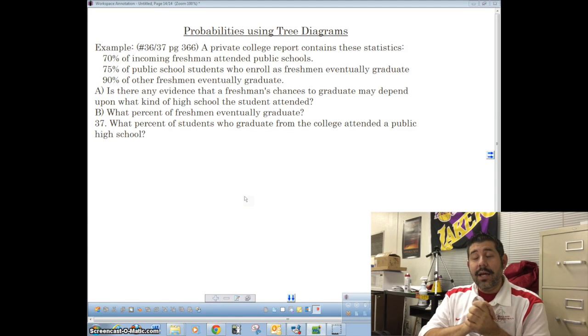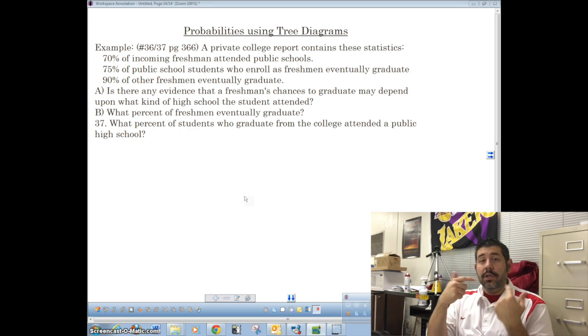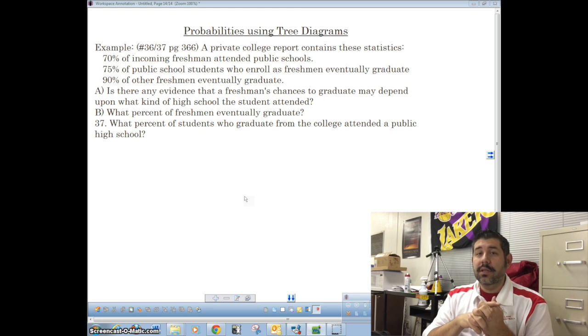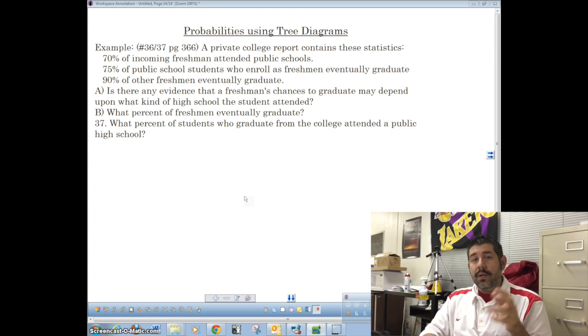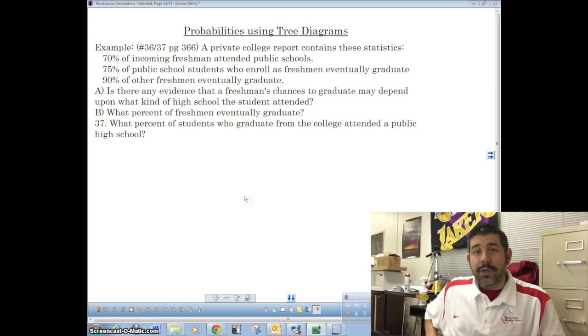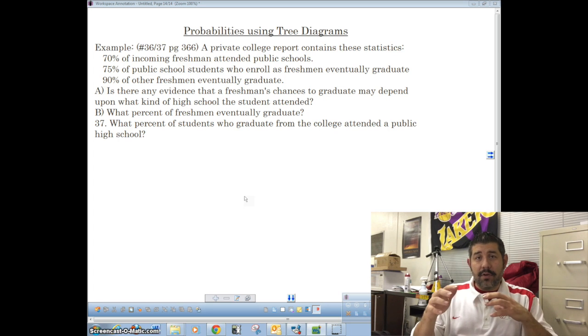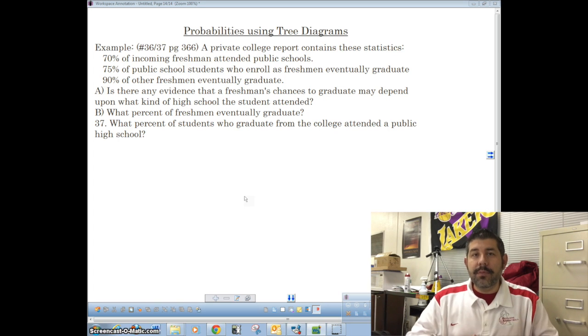I'm only going to do one example here, so it's a really quick problem. This is number 36 and 37 from page 366 in the BVD book. What I'm going to say real quick about tree diagrams is that they're different than Venn diagrams in really what type of problem that we're dealing with.